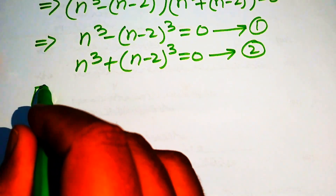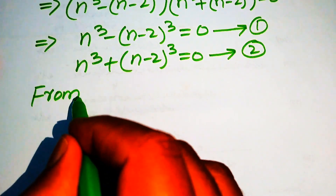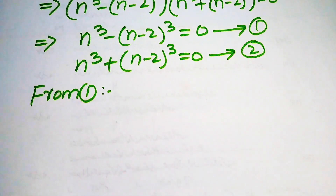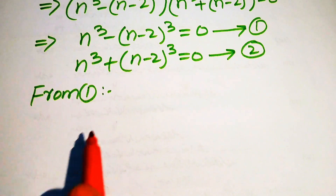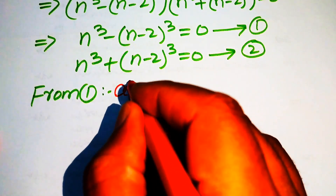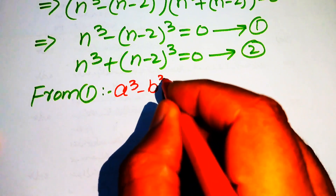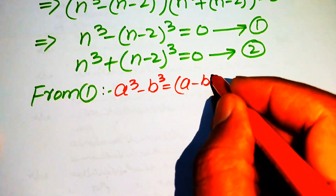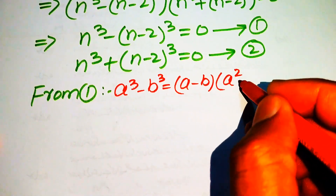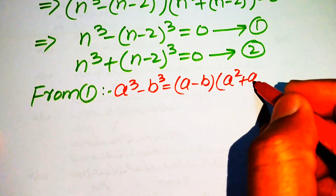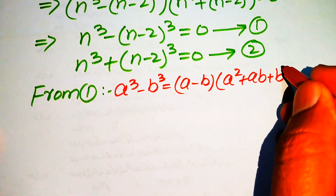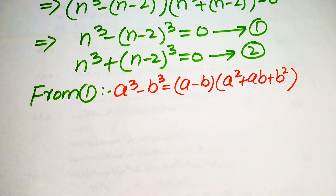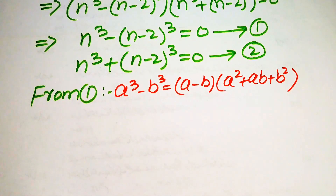Now we solve these two equations one by one. First we focus on equation number 1, and we use the difference of cubes formula. We know that a cubed minus b cubed equals a minus b times a squared plus ab plus b squared. We apply this nice formula to equation number 1.